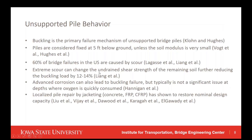Here are some high-level literature review findings. Buckling is the primary failure mechanism of unsupported bridge piles. Piles are considered fixed at five feet below ground unless the soil modulus is very small. Sixty percent of bridge failures in the United States are caused by scour. Extreme scour can change the undrained shear strength of the remaining soil, further reducing the buckling load by 12 to 14 percent. Advanced corrosion can also lead to buckling failure, but this is typically not significant given that oxygen levels at lower depths are quickly consumed and not regenerated. Localized pile repair by jacketing has been shown to restore nominal design capacity.